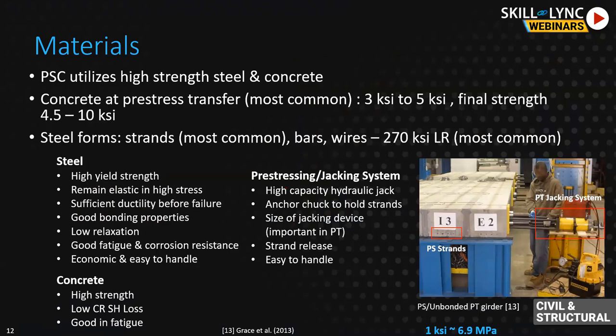Let's look at materials. Prestressed concrete utilizes high strength materials - steel and concrete. At release, we want to make sure there is enough strength, which we call initial compressive strength. Concrete at transfer, we most commonly try to keep it at 3 to 5 ksi - one ksi is around 6.9 megapascals - and then the final strength can vary from 4.5 ksi up to 10 ksi.